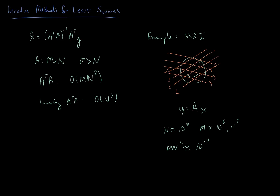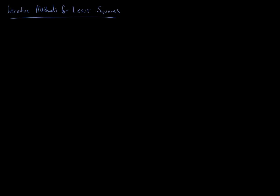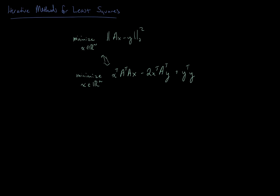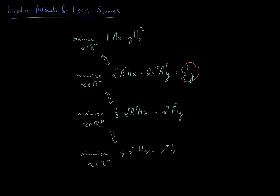To see how this approach is going to work, recall that the least squares solution — even though we have a formula for it — was derived as the solution to an optimization problem where we minimize over all x in R^n the two-norm squared of Ax minus y. If we expand this out, we can write this as minimizing x transpose A transpose Ax minus 2x transpose A transpose y plus y transpose y. The y transpose y term is the same for all values of x, so we can ignore it. We can also rescale the objective by one half for convenience. So an equivalent problem is to minimize one half x transpose A transpose A x minus x transpose A transpose y. To simplify notation, I'll replace A transpose A with H and A transpose y with b, giving us a compact optimization problem.